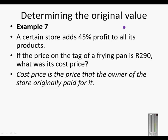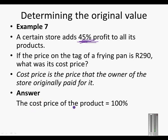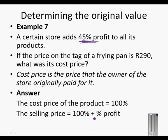The cost price is the price that the owner of the store originally paid for it. On top of that, the owner wants to earn some profit — in this case, 45% added to all products. So the cost price is 100%, and the selling price is 100% plus the percentage profit. In this case, 100% plus 45% equals 145%.